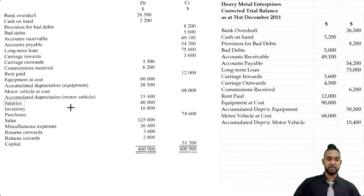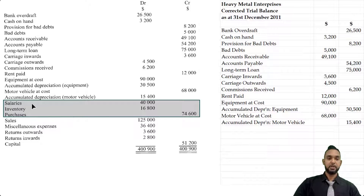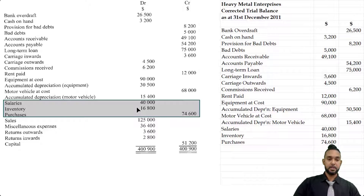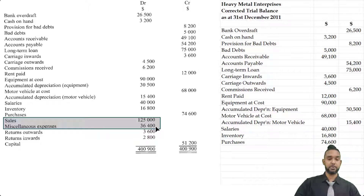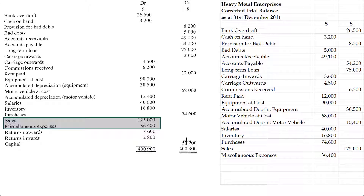Next we have salaries, inventory, and purchases. Salaries is an expense, inventory is an asset, and purchases is an expense — all of these items have debit balances. Sales is a revenue and revenues have credit balances. Miscellaneous expenses of $36,400 is an expense and has a debit balance, so that one was already in the correct column.